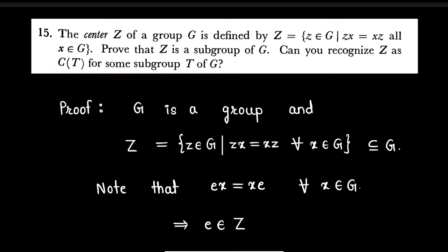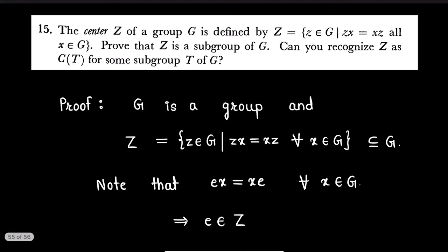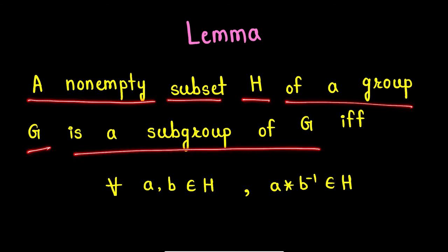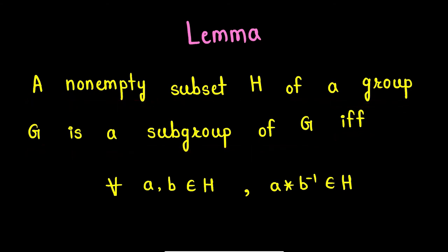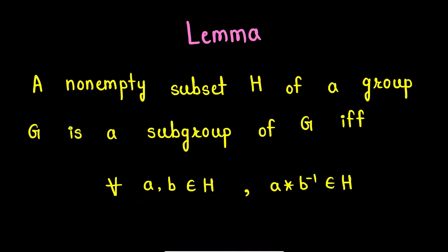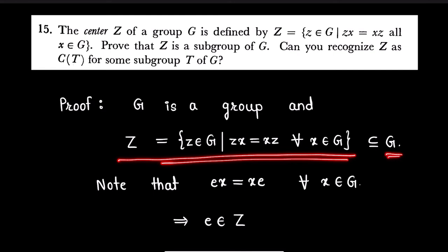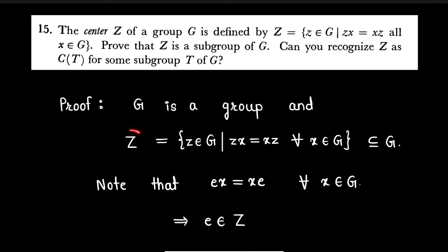Let us start our proof. To prove that the center is a subgroup of G, we will use the lemma: a non-empty subset H of a group G is a subgroup of G if and only if for all elements a, b in H, a star b-inverse is also an element of H. Now, G is a group and Z is clearly a subset of G — Z is the collection of all those elements in group G which commute with all other elements of G.